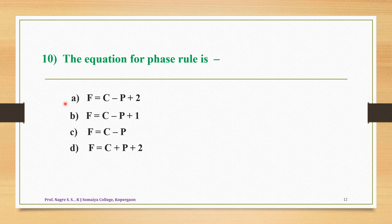Question number ten: the equation for the phase rule is — option A is F = C − P + 2, option C is F = C − P + 1, and option D is F = C + P + 2. The correct equation for the phase rule is option A: F = C − P + 2.